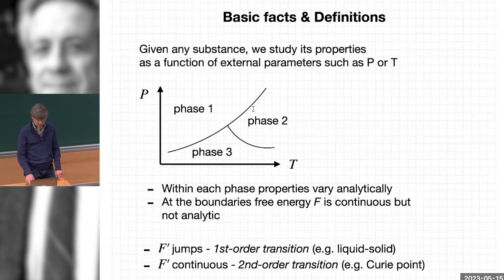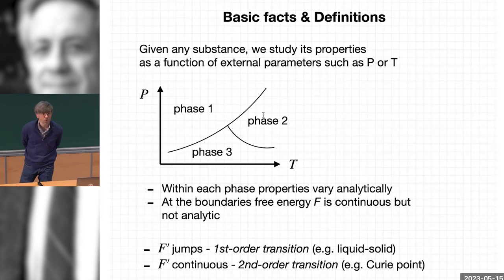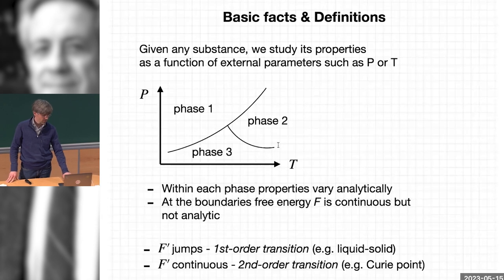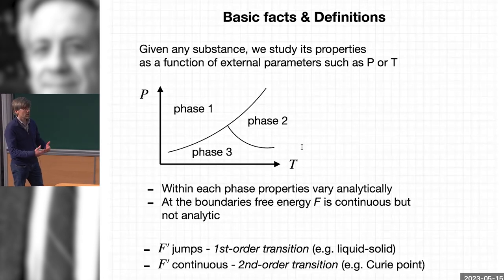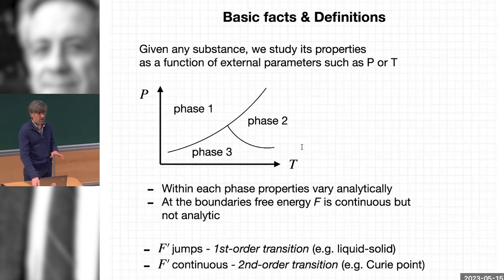The main thermodynamic quantity is free energy. Free energy changes continuously in this space, but when you cross these boundaries you can have typically either discontinuities in the first derivatives of the free energy — this is called a first-order phase transition — or sometimes discontinuities in the second derivative while the first derivative is continuous, and this is called a second-order phase transition. The example of a first-order transition is the liquid-solid transition, and the example of a second-order transition is the Curie point in a magnet as a function of temperature.